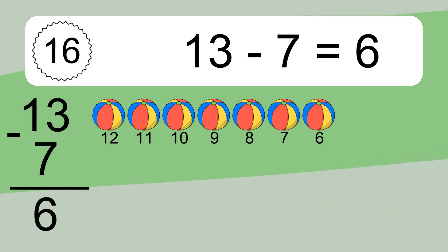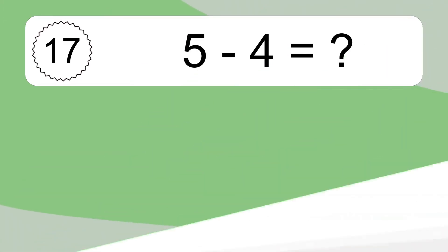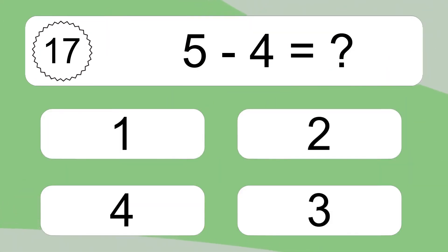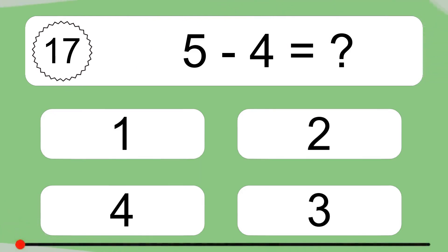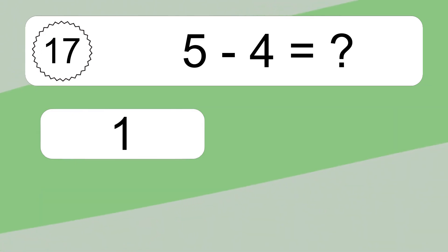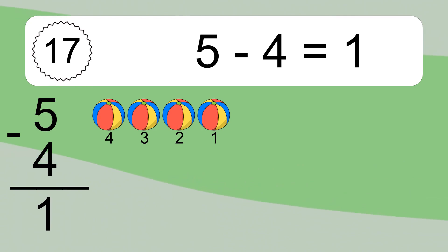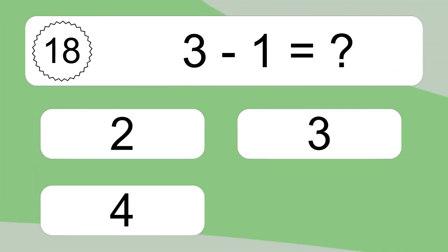13 minus 7 equals 6. Let's count it. 12, 11, 10, 9, 8, 7, 6. 5 minus 4 equals what? 5 minus 4 equals 1. Let's count it. 4, 3, 2, 1.